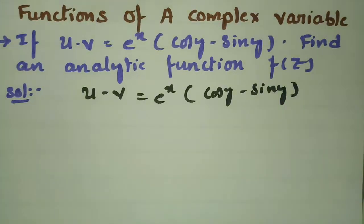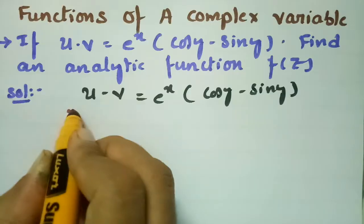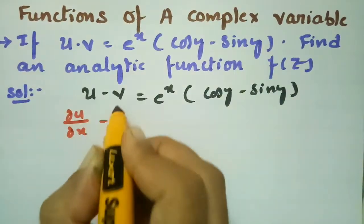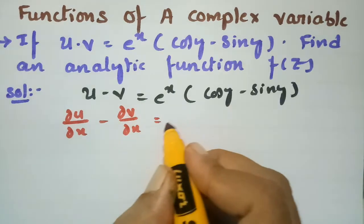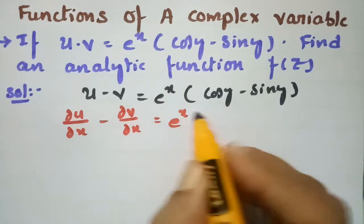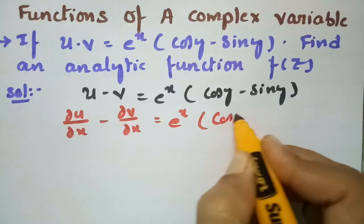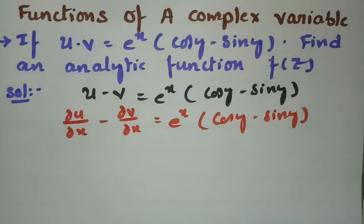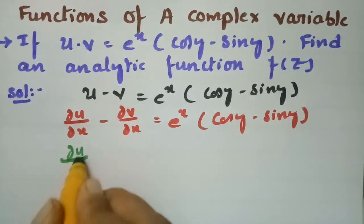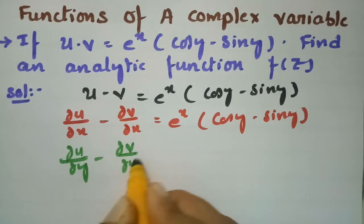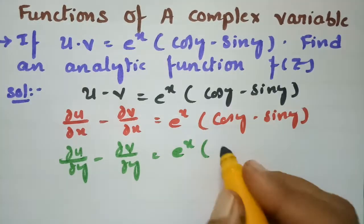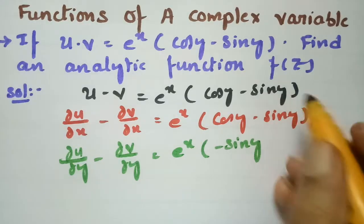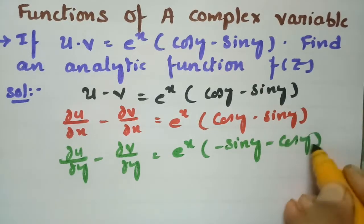For convenience, I am making a derivative with respect to x. So that is ∂u/∂x minus ∂v/∂x equals e^x times (cos y minus sin y). And if I make a derivative with respect to y, then e^x treats as a constant and for cos y this is minus sin y, and for sin y this will be cos y.